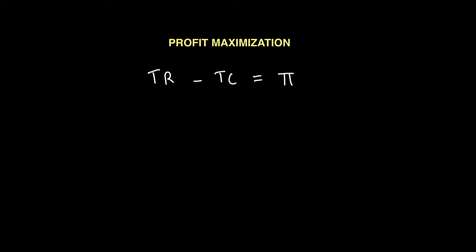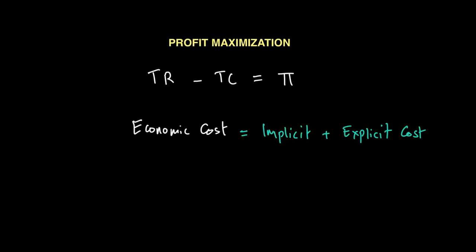Profit maximization happens at a point where the gap between revenue and cost is the largest — wherever the gap between total revenue and total cost is maximum is where we maximize profit. Here, cost implies our economic cost, which means both implicit and explicit cost, meaning we are also taking opportunity cost into account. So economic profit equals a firm's total revenue minus the total opportunity cost of its operation — that is, both explicit and implicit cost. In other words, economic profit equals total revenue minus total economic cost.